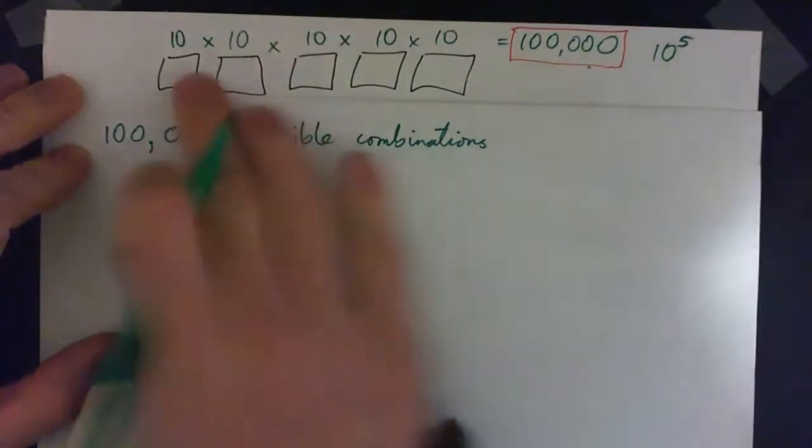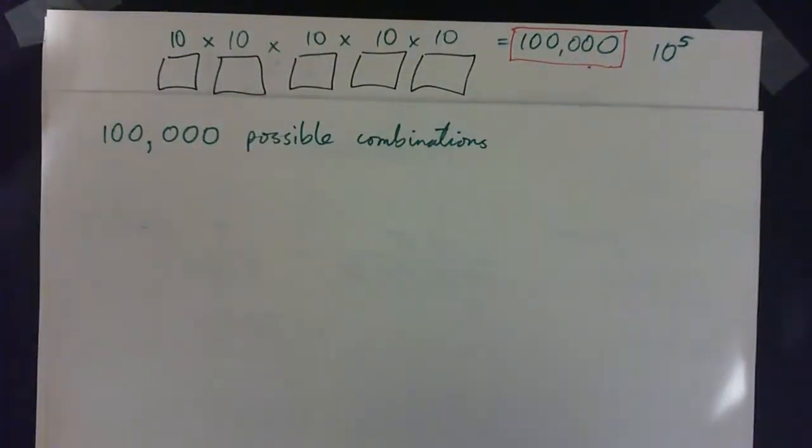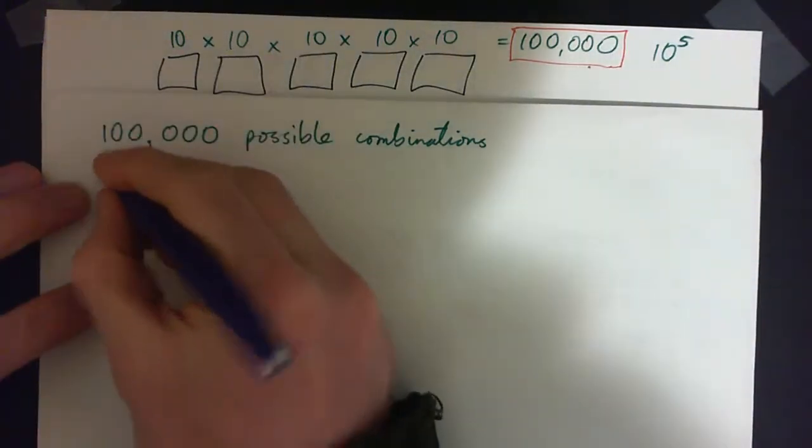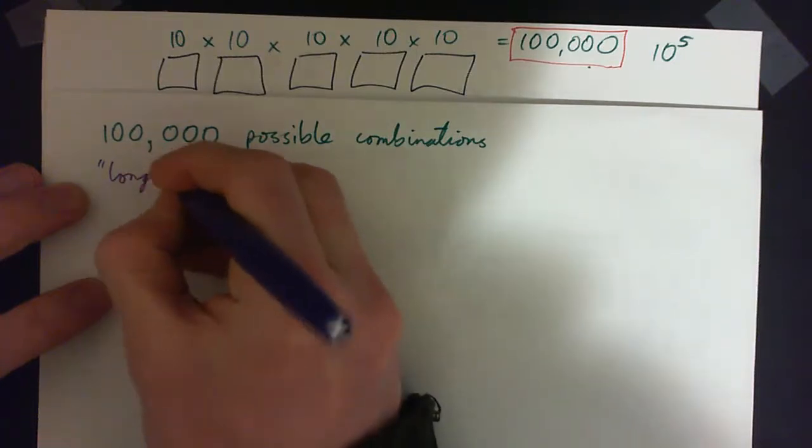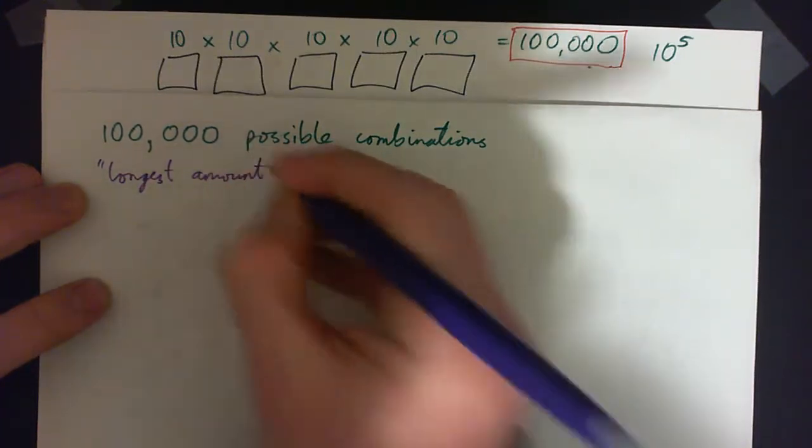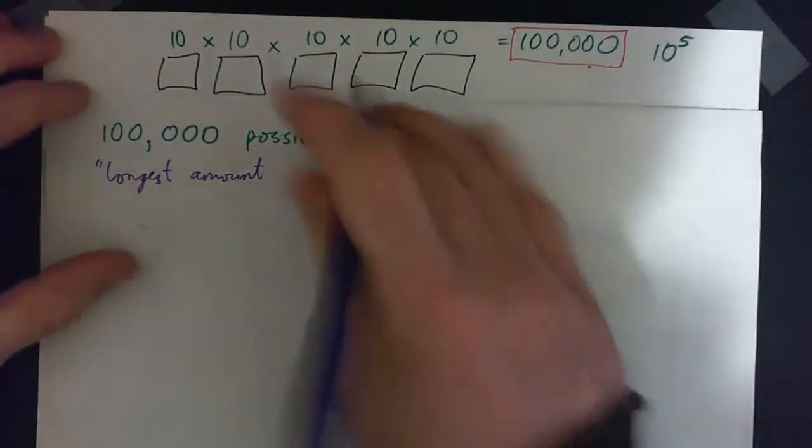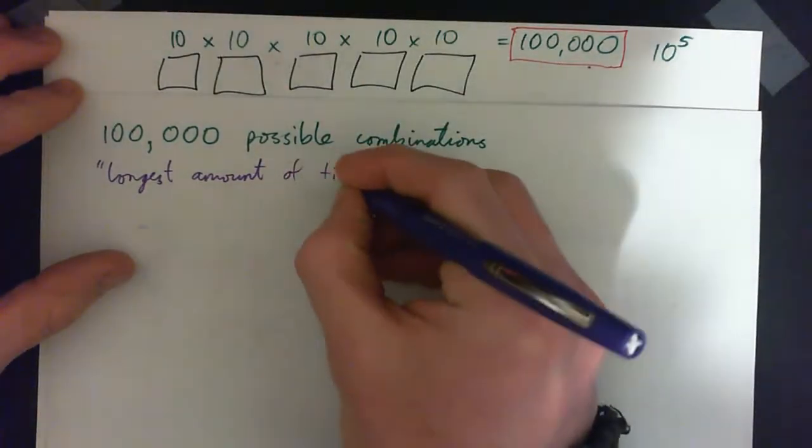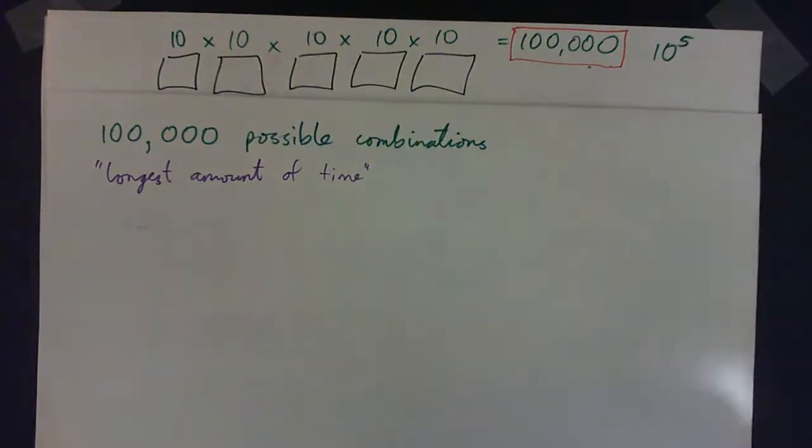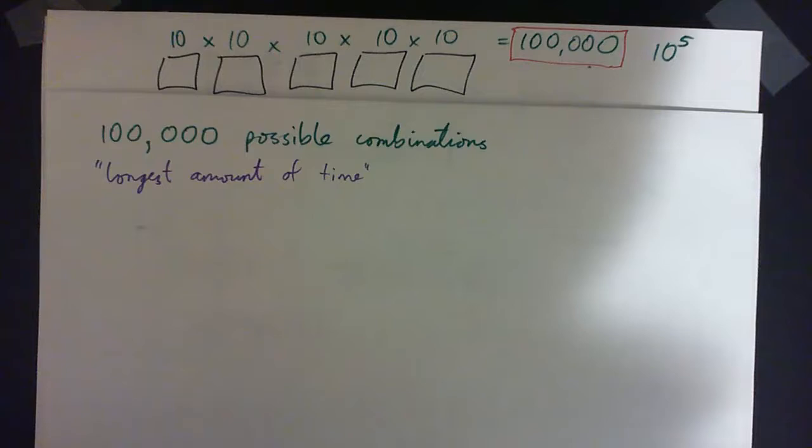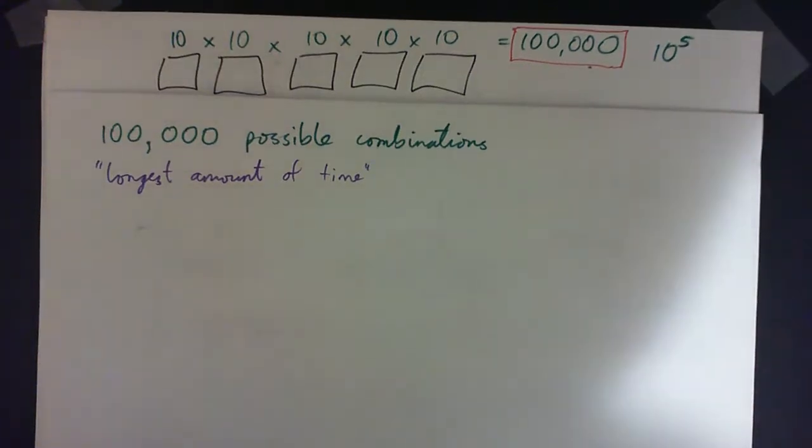You're going to try one every second. What's the longest amount of time it could take? The longest amount of time means just imagine you don't get it until the very end. You don't guess the answer until the very end and you're guessing the combination every second. You could be lucky and get the correct combination early in the process or halfway through or later or whatever. But what would be the longest possible amount of time if you didn't get it until the very end and you guessed a new combination every second.